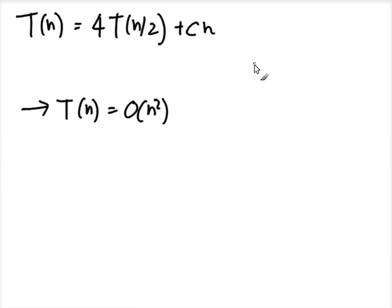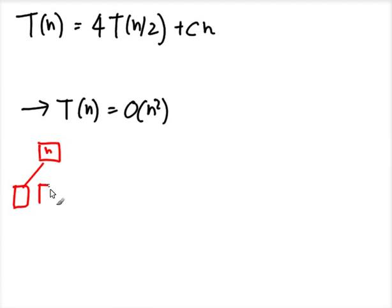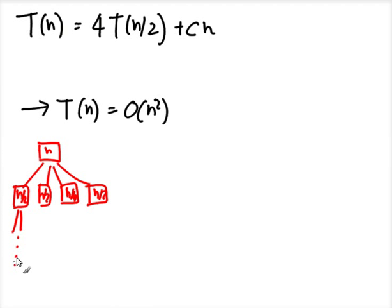Let's recap our failure. We think about a divide-and-conquer algorithm to multiply two n-bit integers. We have a problem of size n, and we solve it by multiplying n/2-bit integers four times. This gives us a recurrence that solves to O(n²).